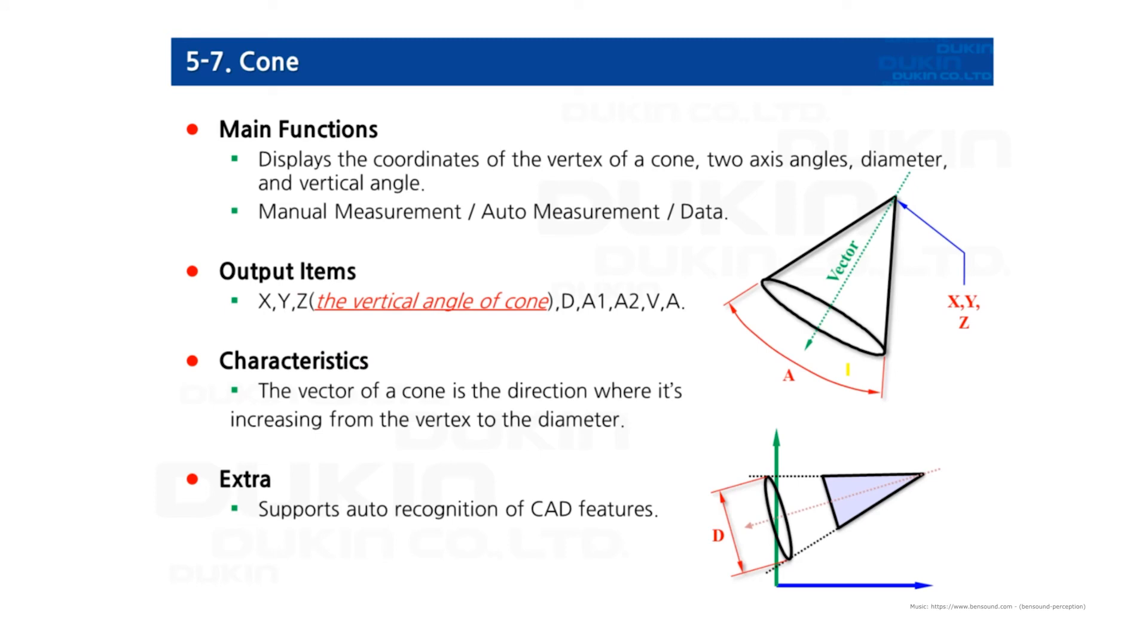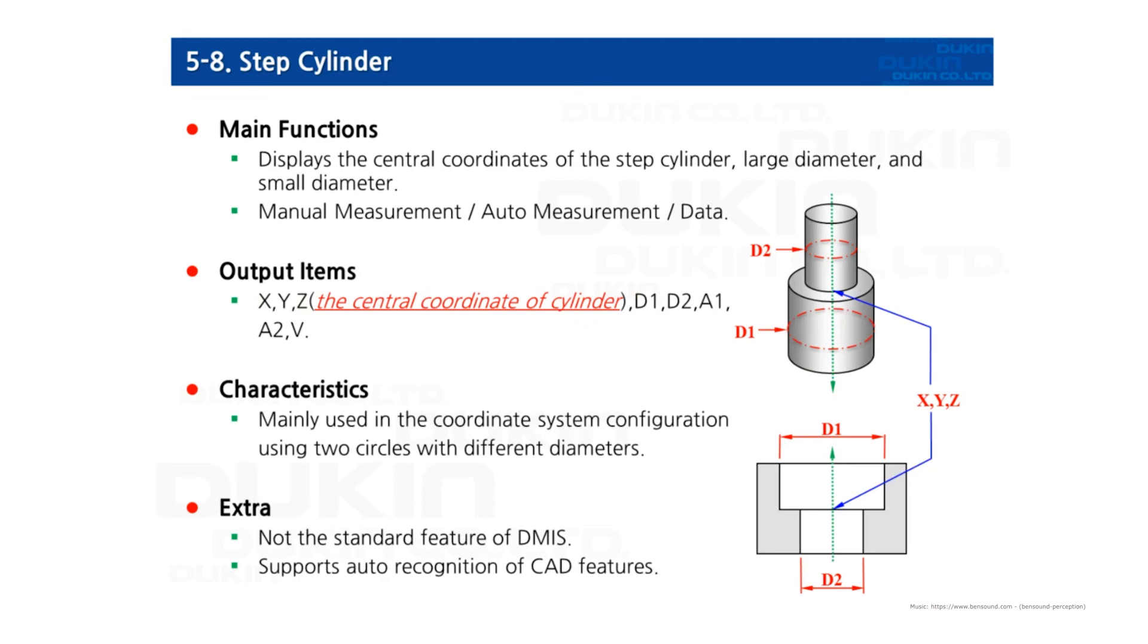And the cone. The minimum measuring points required of measuring a cone is eight points. It outputs X, Y, Z on the vertex of the cone and diameter, A1, A2, and A as the cone's vertical angle. The diameter of a cone means the sliced circle's diameter when the axis of the cone meets any of reference plane's axis, which is just like this.